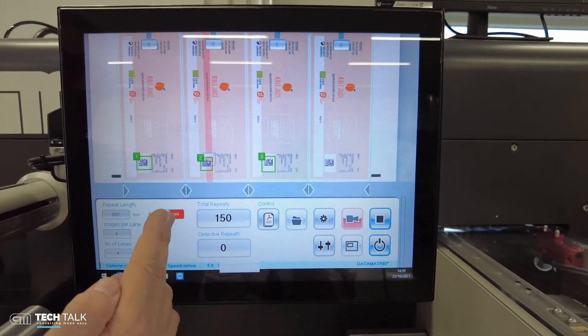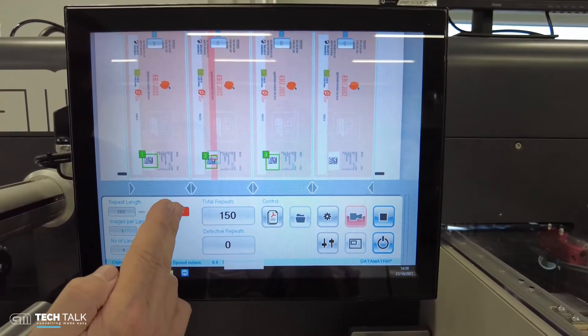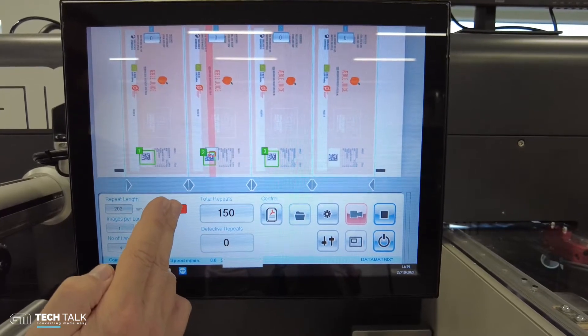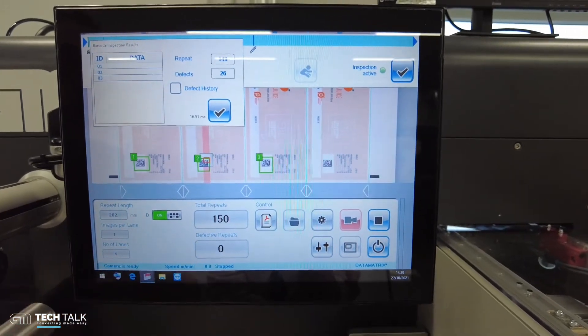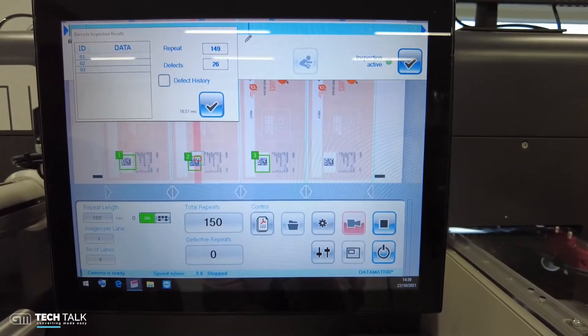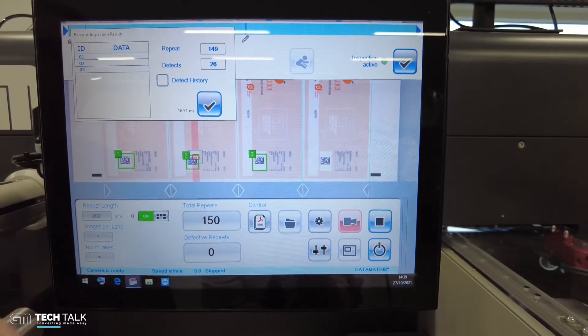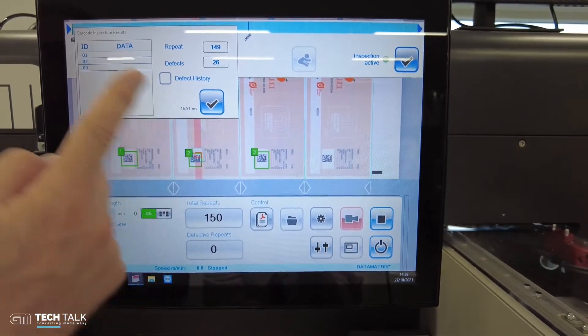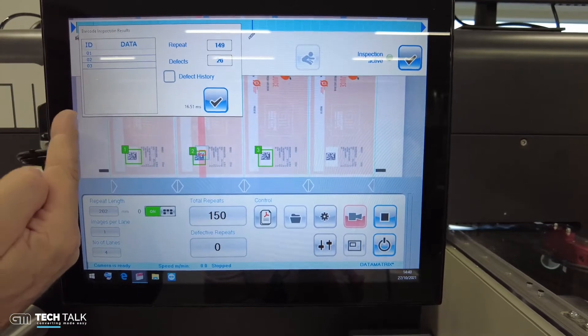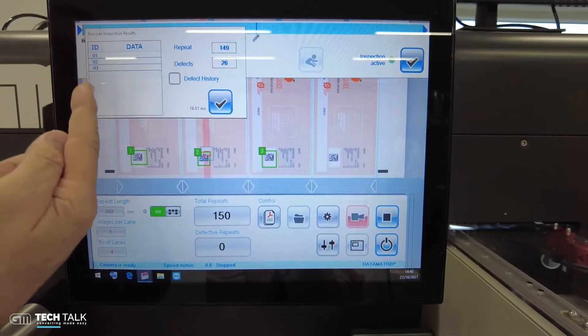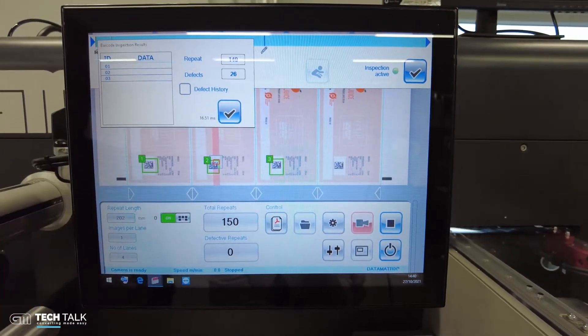Now we can activate the system by switching on the defect detection mode because we should not forget in the background we will perform 100% print defect detection and the barcode is an add-on. You see immediately a window popping up showing the content of the data matrix and as soon as I will start the machine.